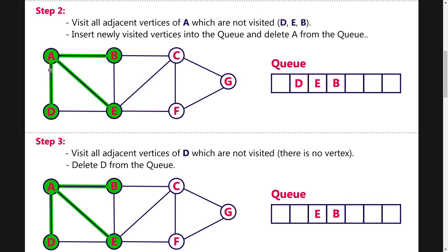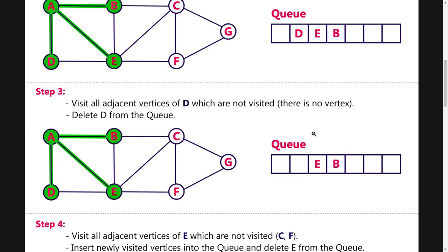Next, if we look at Q, we will see D. We visit D and look at its adjacent nodes. We have already visited A and E, so there is no non-visited adjacent node for D. We delete D. In the queue we now have E and B.